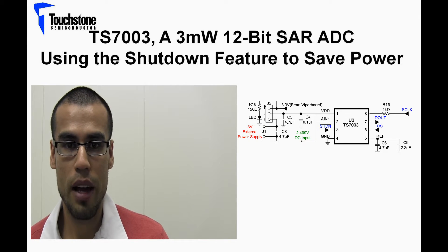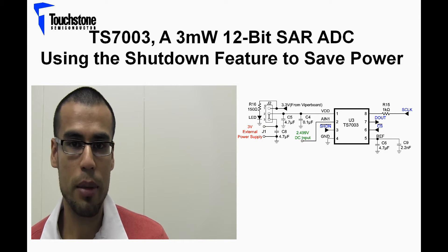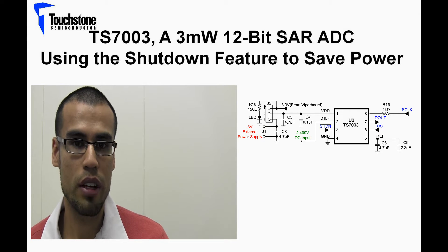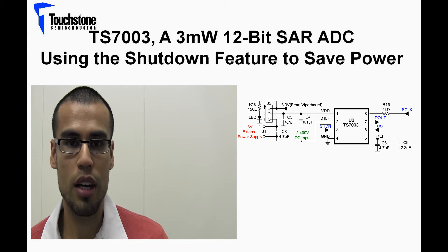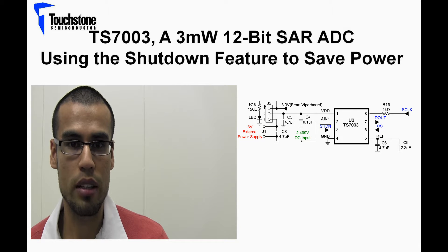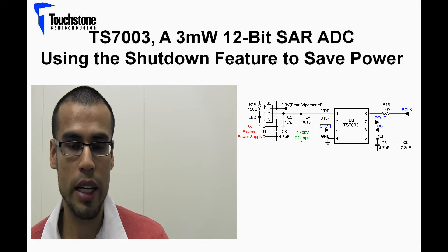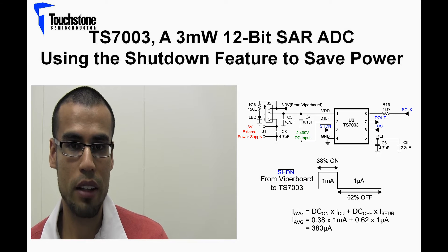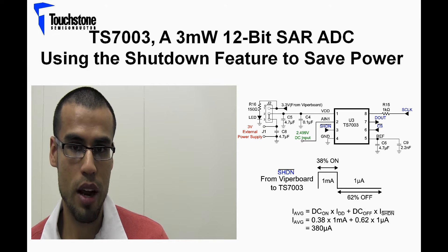Tens or hundreds of microamps can make a significant difference. In this short video, I will show you how the shutdown feature of our TS7003 3mW 12-bit SAR ADC reduces the supply current by a factor of 2.5.